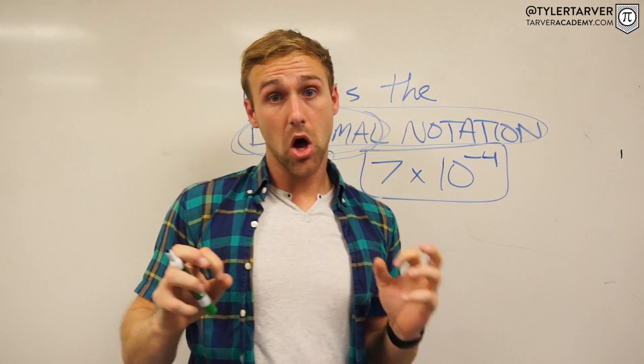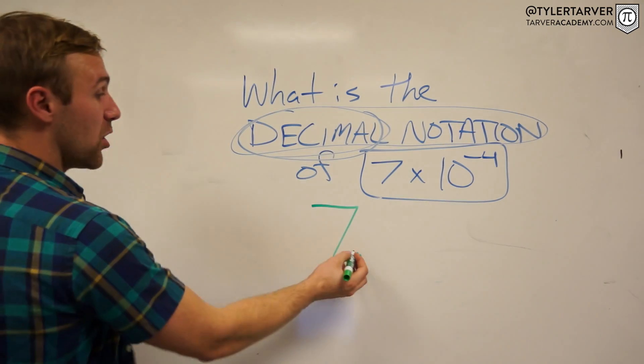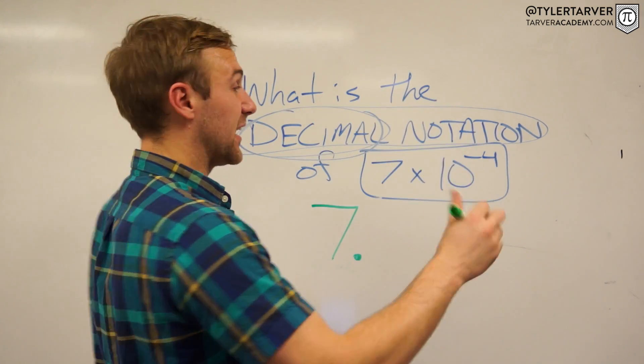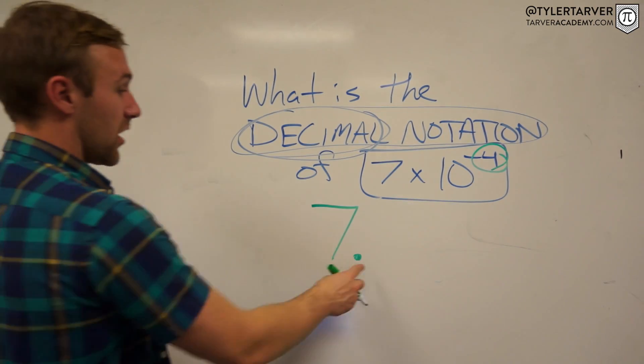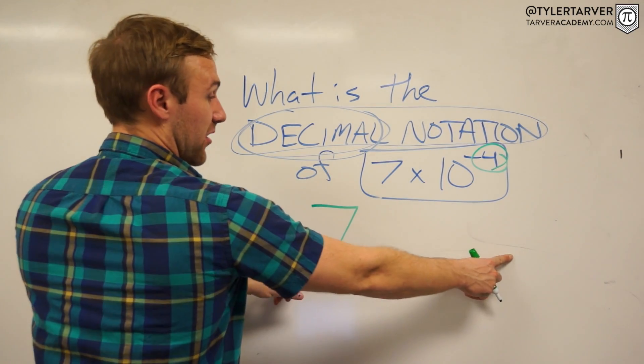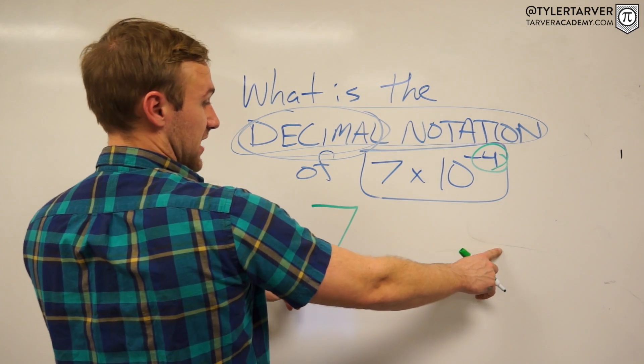Okay, so we need to move our decimal four places to either left or right. We need to go to the right would make that a bigger number. It would make it like, I don't know, 70,000.